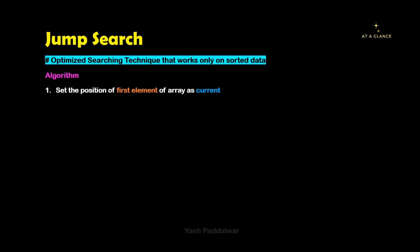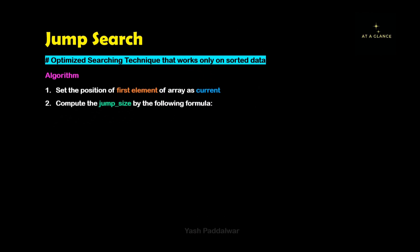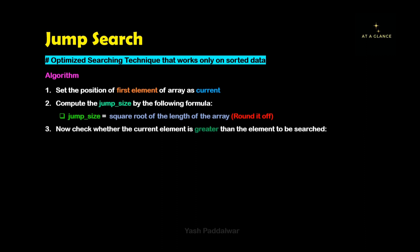The first step is to define the first element as the current element. Next step is to find out the jump size. You can find out the jump size with the following formula, which is nothing but the square root of the length of the array. If the length of the array is not a perfect square, then it is recommended to round off the value.